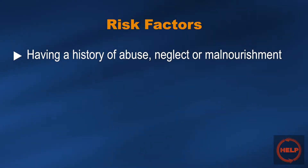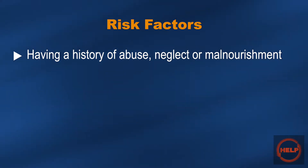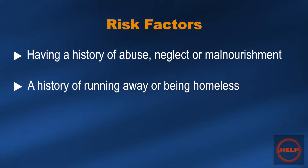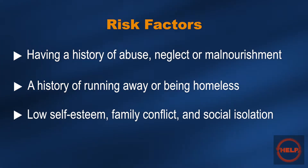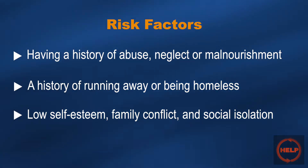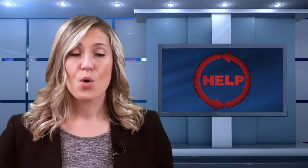Anyone, adult or child, could become a victim of human trafficking, but there are certain risk factors that put someone at higher risk. These include having a history of abuse, neglect, or malnourishment, a history of running away or being homeless, low self-esteem, family conflict, and social isolation. Additionally, the younger a person is, the more vulnerable they are to the tactics traffickers use. While no single risk factor causes a person to become a victim, risk factors do increase the individual's vulnerability and should be considered when looking for warning signs.